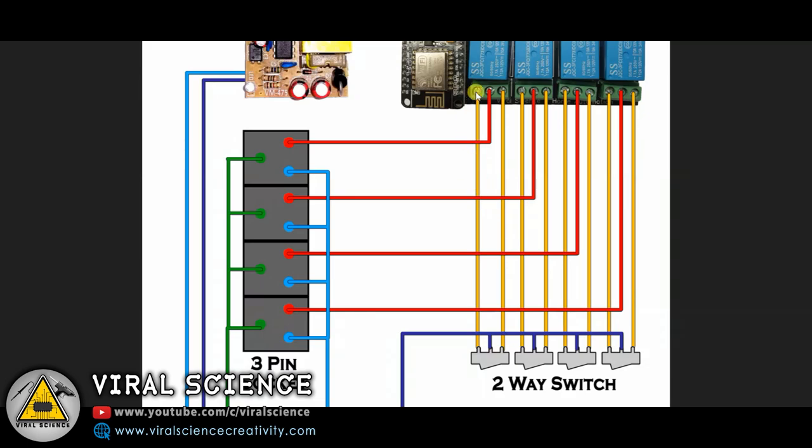So first we have connected the first pin of the relay to the first pin of our 2-way switch. Then we have connected the third pin of our relay to the third pin of our 2-way switch. In this way I have connected all the relays and all the switches with each other in this manner. Now we are left with the center pin of the relay and the center pin of the switch.